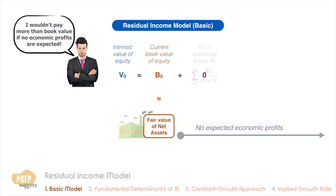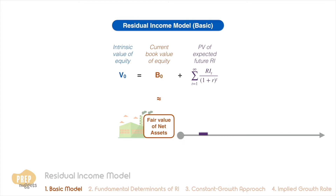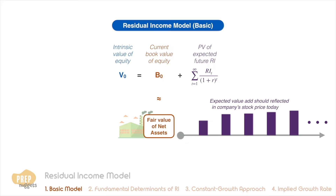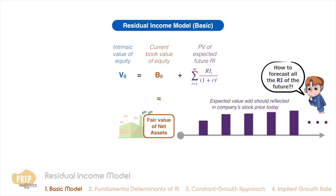Investors wouldn't want to pay more than book value if no economic profits are expected. However, if the firm is forecast to earn economic profit, the expected value add should be reflected in the company's stock price today. This should be the sum of the present values of expected residual income.